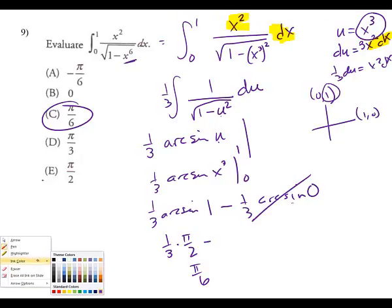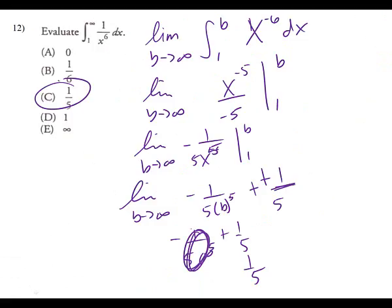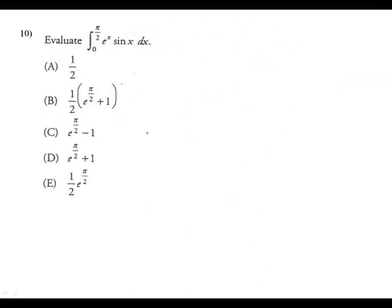Number 10. It looks like integration by parts. But can I really do the tabular method? Do either of these ever get a derivative down to zero? No — they both keep cycling. So this is a unique one where we need to keep both sides.